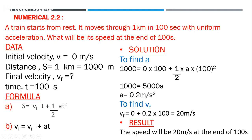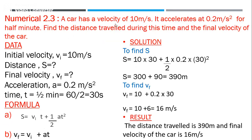Data: vi = 0, s = 1000 m, t = 100 s, vf = ? Using the second equation of motion: s = vi·t + ½a·t², we get 1000 = 0×100 + ½·a·100², so acceleration a = 0.2 m/s². Then using the first equation: vf = vi + a·t = 0 + 0.2×100 = 20 m/s.